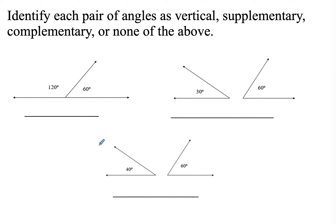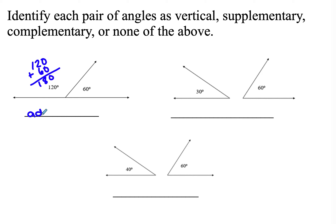For our next type of problem, identify each pair of angles as vertical, supplementary, complementary, or none. For our first one, 120 plus 60 equals 180, so these are adjacent — they share a side — and they are supplementary.